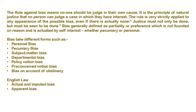What does rule against bias mean? No one should be judged in their own cause. This principle of natural justice means that whatever person is judging a case, if there is self-interest in that case, then the person cannot judge it. This rule is strictly applied when there is a possibility of bias — it should not be established bias, only the appearance of a possible bias. Which means justice must not only be done, but must be seen to be done.